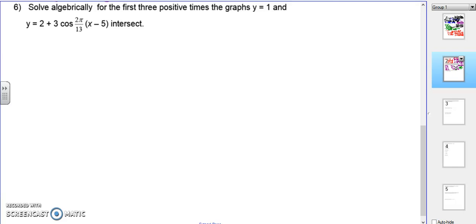Hi students, we're back with question number six. It says solve algebraically for the first three positive times the graphs y equals 1 and y equals 2 plus 3 cosine 2 pi over 13 times x minus 5 intersect.